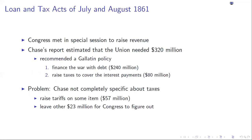By the summer of 1861, Congress meets in a special session to think about how to finance the war. Secretary Chase writes a report saying the Union needs to raise $320 million, recommending a Gallatin-like policy — primarily debt financing, then raising taxes to cover interest payments. It's basically three-fourths debt, one-fourth taxes, very much in the spirit of Gallatin.